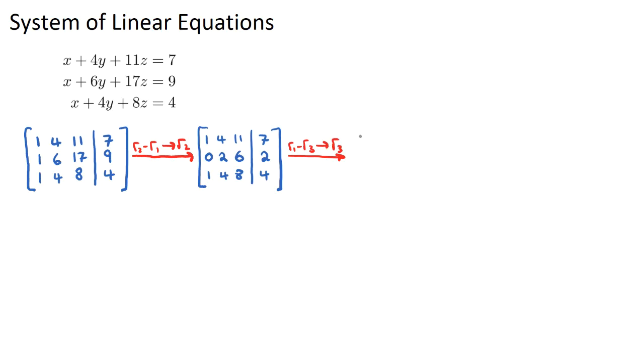So I'm going to say row 1 minus row 3, this will be our new row 3. Okay. So let's draw our matrix in. So row 1 stays the same. Row 2 stays the same. Now, our new row 3 will be row 1 minus row 3. So 1 minus 1 is 0. 4 minus 4 is 0. 11 minus 8 is 3. And 7 minus 4 is 3.